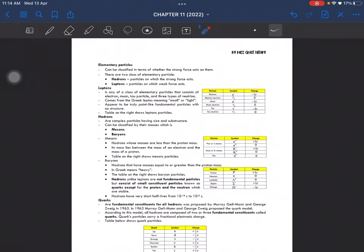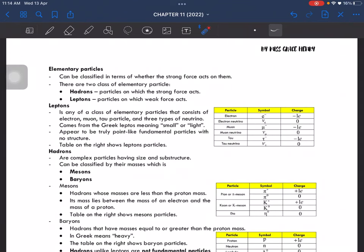Elementary particles can be classified in terms of whether the strong force acts on them or not. There are two classes of elementary particle: hadrons and leptons. Hadrons are particles on which the strong force acts, whereas leptons have the weak force acting on them.